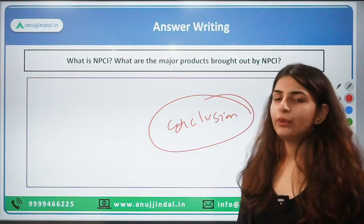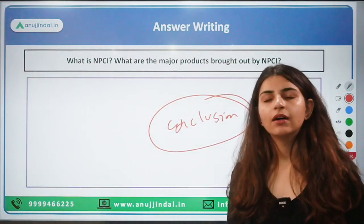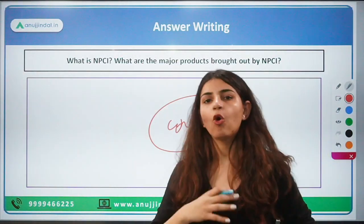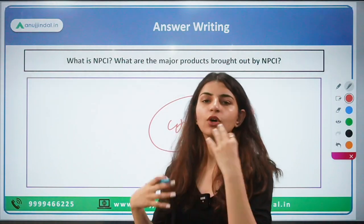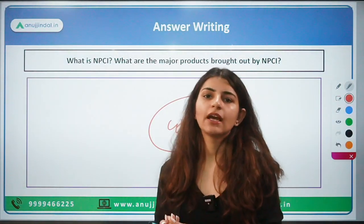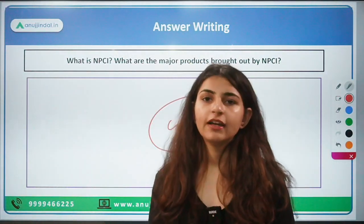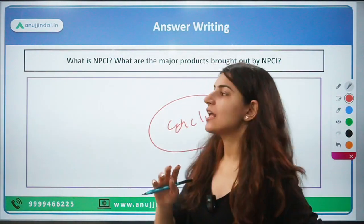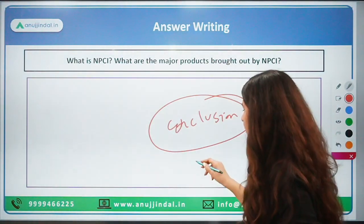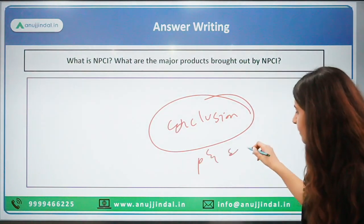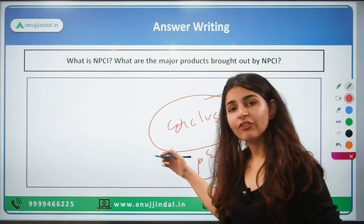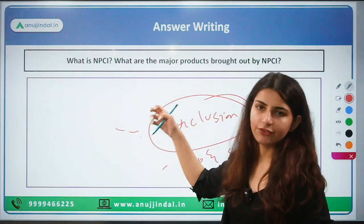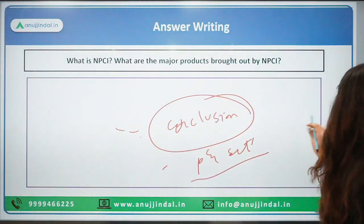You can also write about AEPS — Aadhaar Enabled Payment System — which is used by the government for direct benefit transfer payments under various schemes. BHIM Aadhaar Enabled Payment System is also used by the government. In conclusion, we can write about what NPCI has done and its importance, and mention future areas like AI, machine learning, or Internet of Things, as well as cross-border UPI linkages such as PayNow.